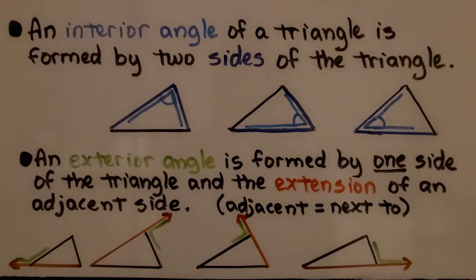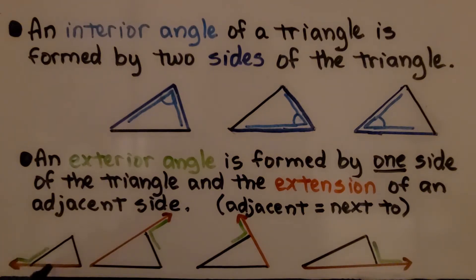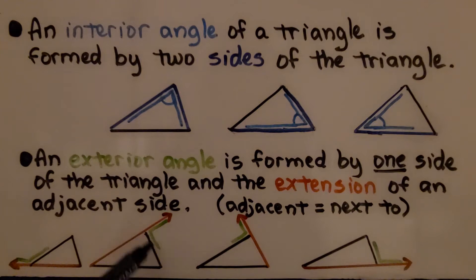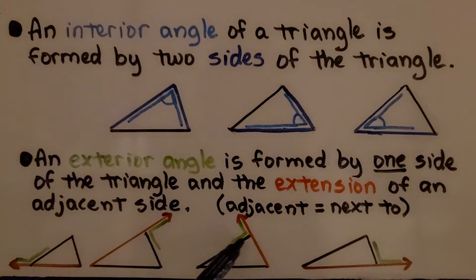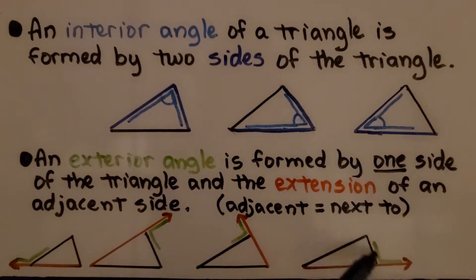An exterior angle is formed by one side of the triangle and the extension of an adjacent side — adjacent means next to. Here we have an exterior angle formed by this extension of this side and this side. Here we have an exterior angle formed by this one side and an extension of this side. We have another one formed by this one side and an extension of this one. And here we have one formed by this side and an extension of this side.